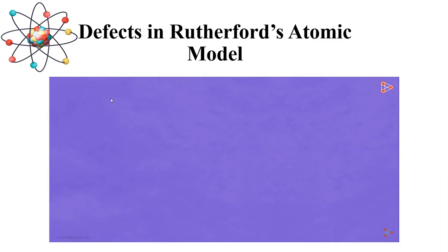Previously, we have discussed in detail how Rutherford's Atomic Model was presented. Rutherford's Atomic Model said that a nucleus is present in the center which contains protons and neutrons, and electrons are revolving around the nucleus.